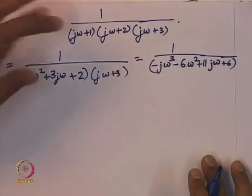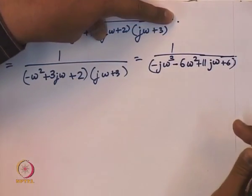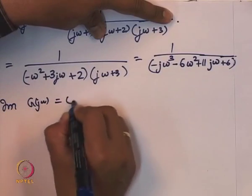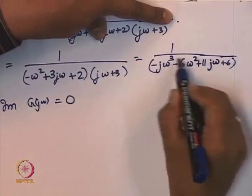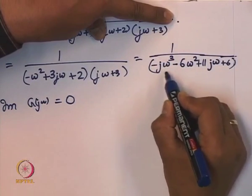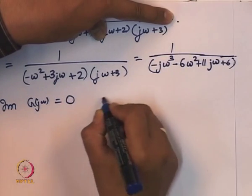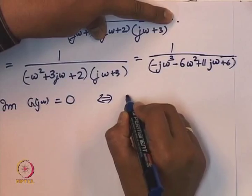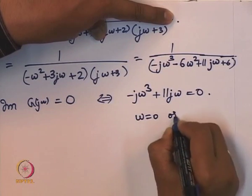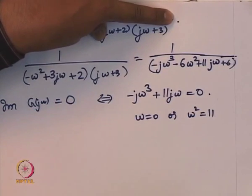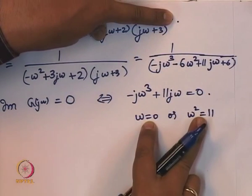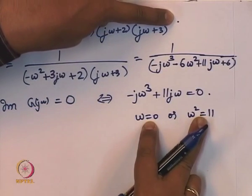Setting the imaginary part of G(jω) equal to zero: since the numerator is real, we need the imaginary part of the denominator to be zero. The imaginary part is −jω³ + 11jω = 0, giving ω = 0 or ω² = 11. These are the only two situations where G(jω) is a real number.